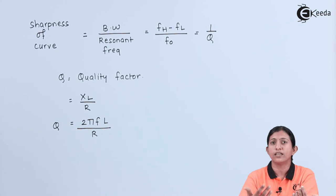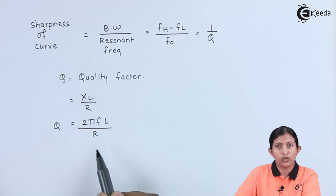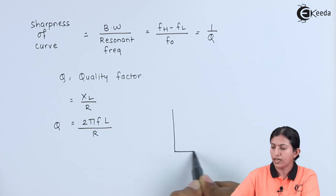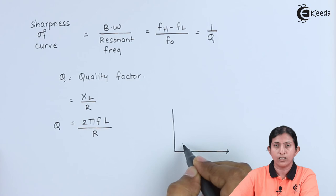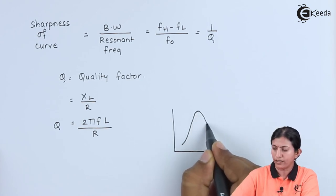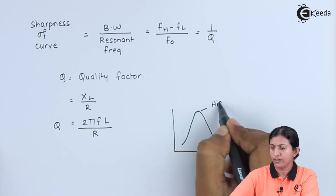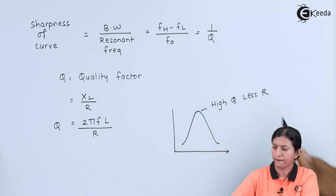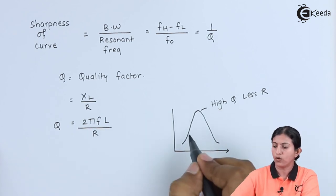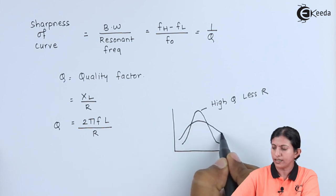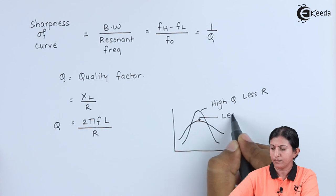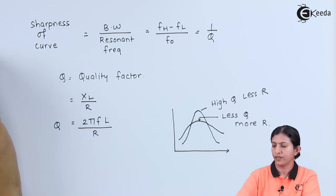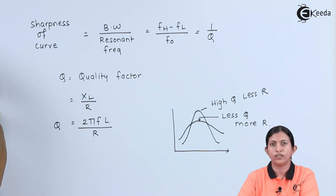Q factor also depends on resistance — as resistance increases, the quality factor decreases. If resistance is low, we get a high quality factor and the circuit is highly selective, meaning it selects the desired frequency and rejects other signals. If resistance increases, Q decreases and the circuit has less selectivity. So the quality factor is important in the selection of the tuned amplifier.